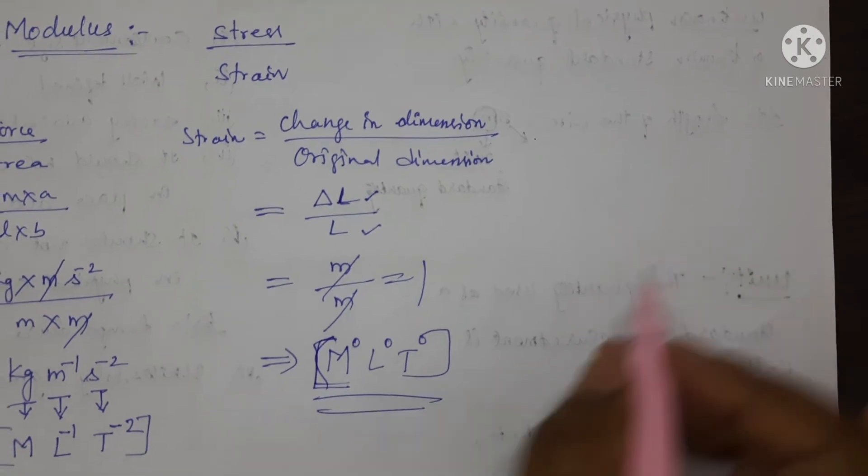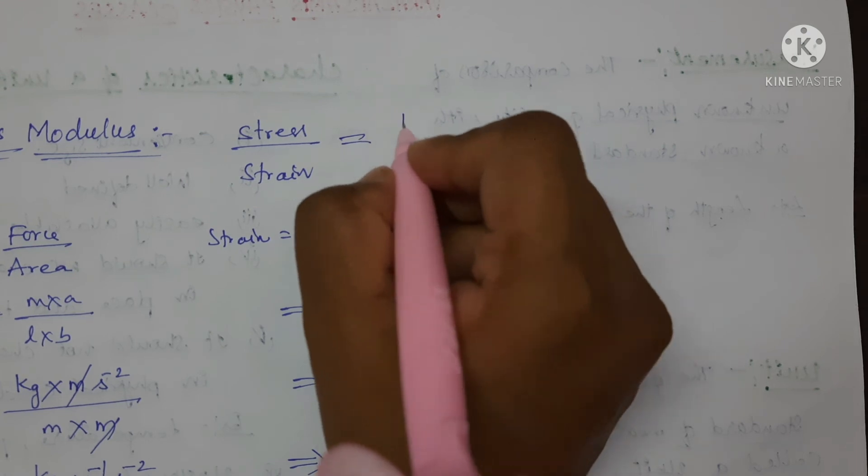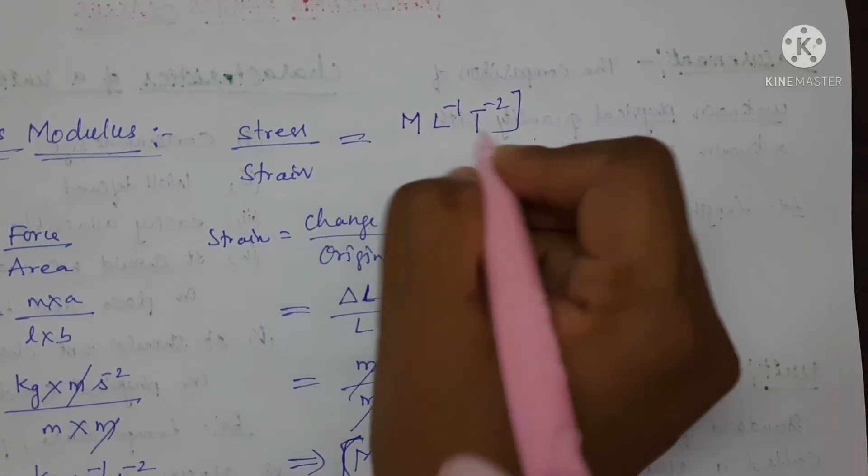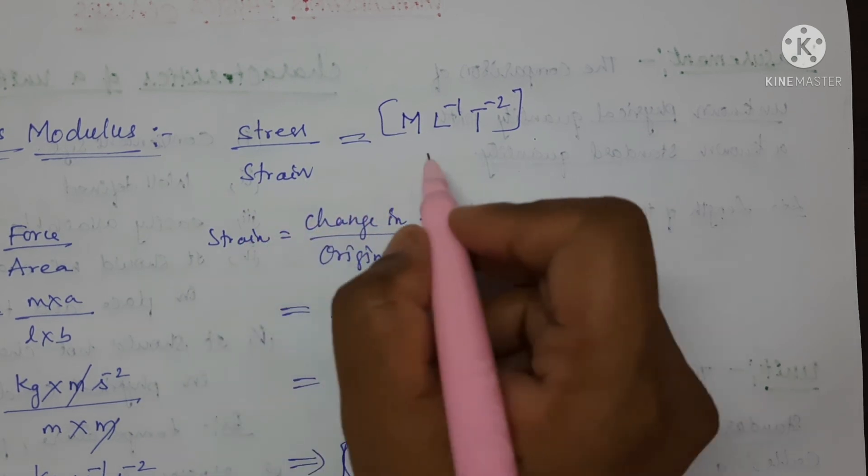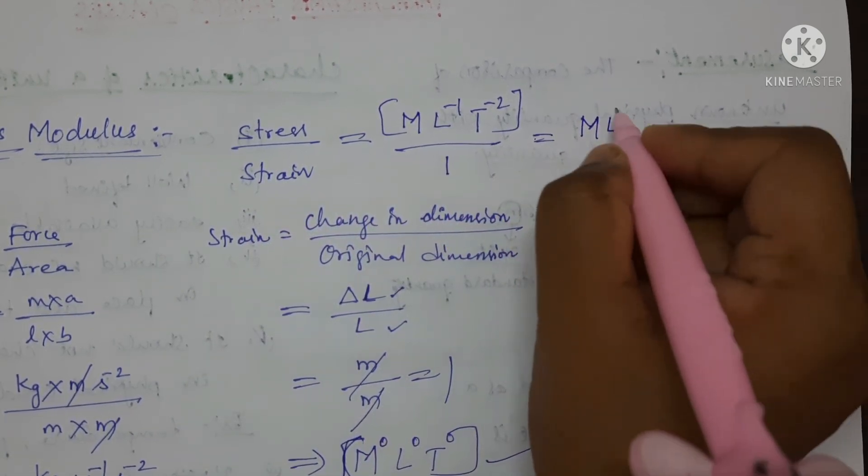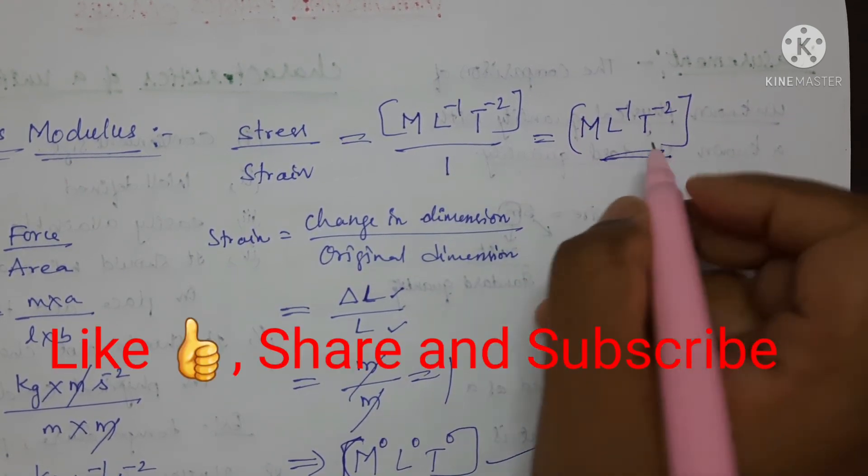Now, substitute these two formulas here in this equation. We will get M, L power minus 1 and T power minus 2. And here strain is a dimensionless quantity, so I am writing as 1. So, M, L power minus 1, T power minus 2 is the dimensional formula for Young's modulus.